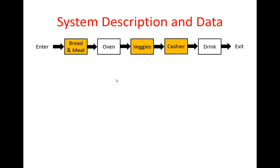The system that we're going to consider here is a typical subway restaurant where we have five stations. In the first station, customers order the type of bread, meat, and cheese for their sandwich. Then the sandwich goes to the oven to be toasted. After that, the sandwich and the customer go to the veggie station where they put lettuce, tomatoes, and other types of veggies on their sandwich. Finally, they go to the cashier and make the payment, then customers go to the drink machine and get a drink, and then they leave the system.